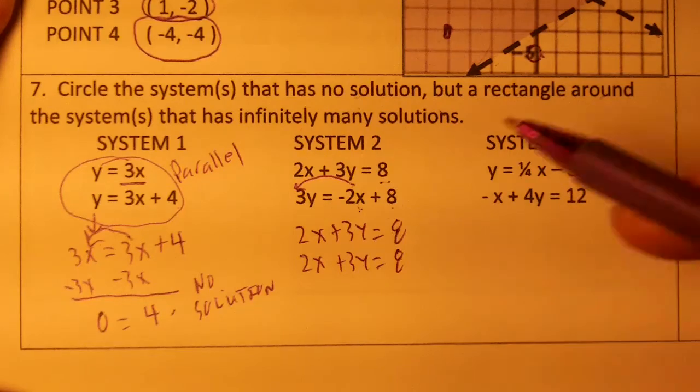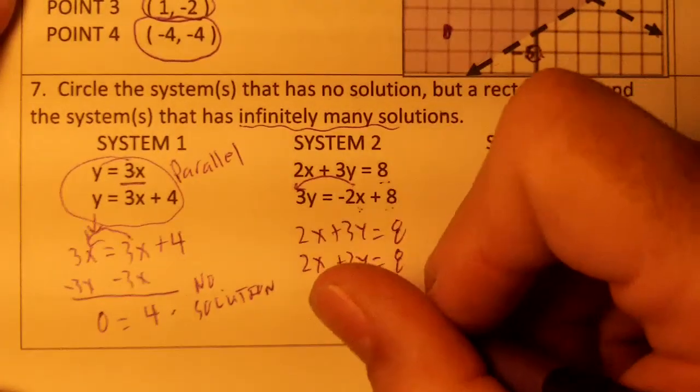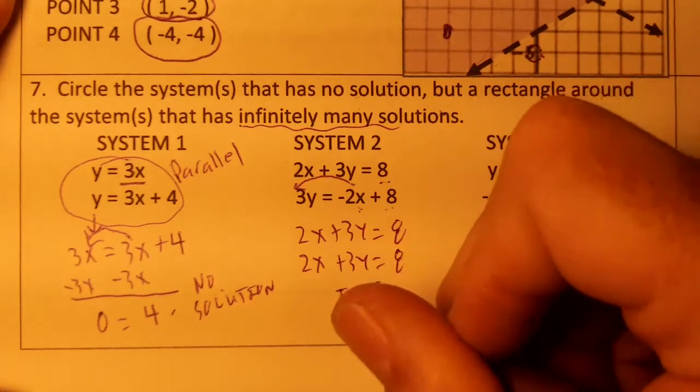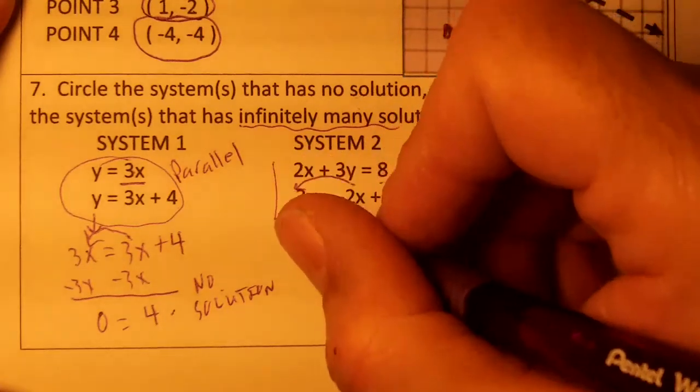Notice they're the same equations. If the equations are the same, it has infinitely many solutions. And I'm going to abbreviate infinitely many. Okay, if it has infinitely many, we'll put a rectangle around it.